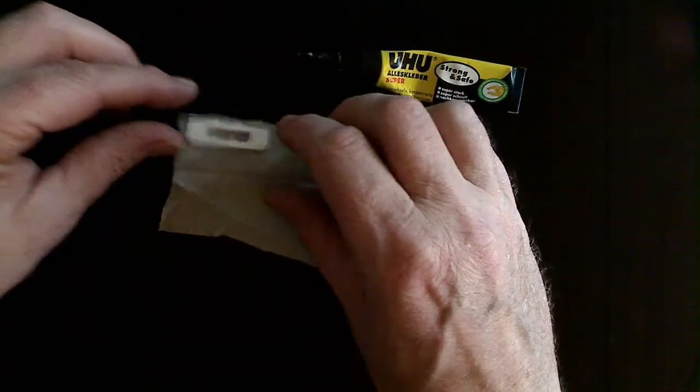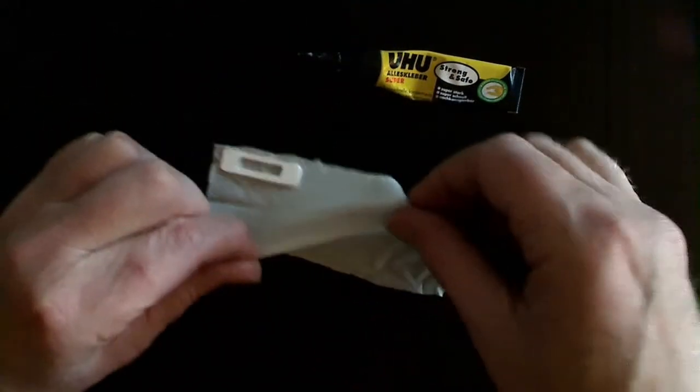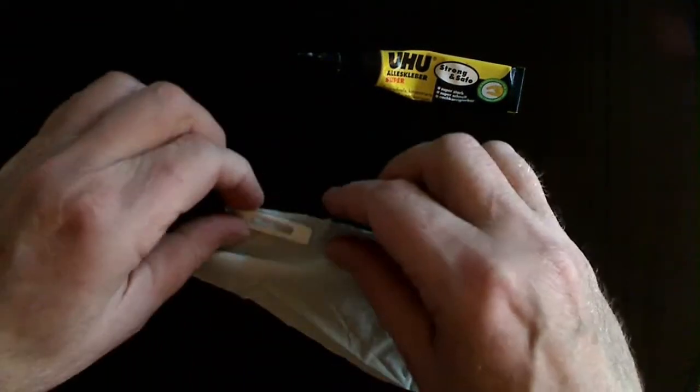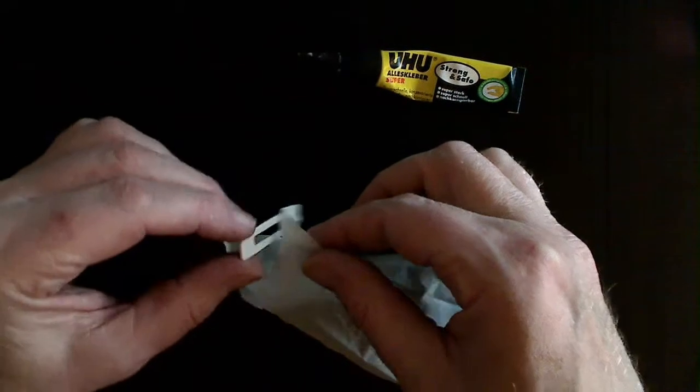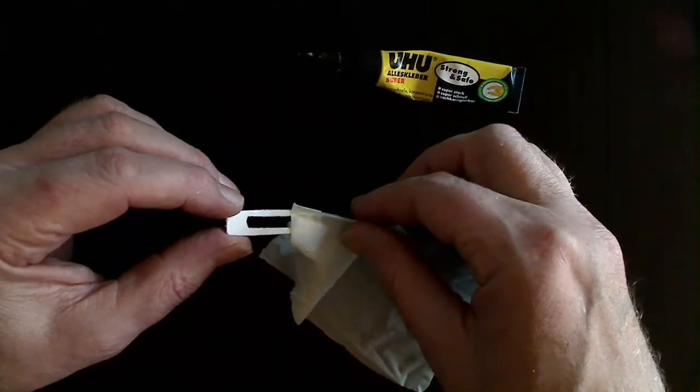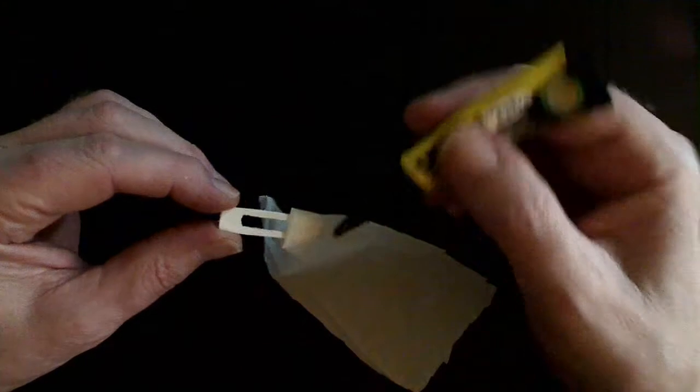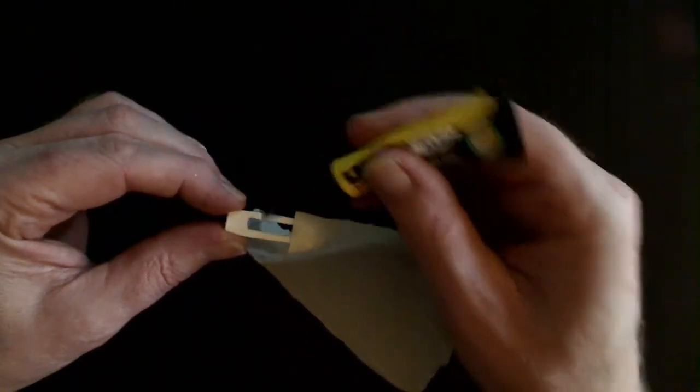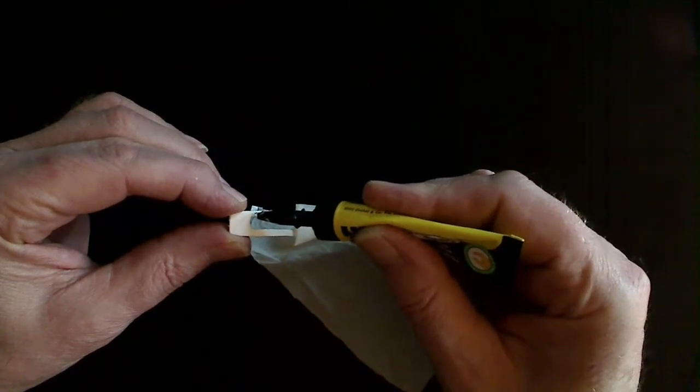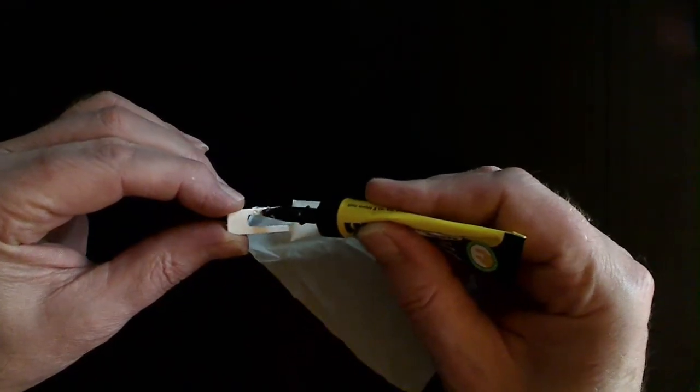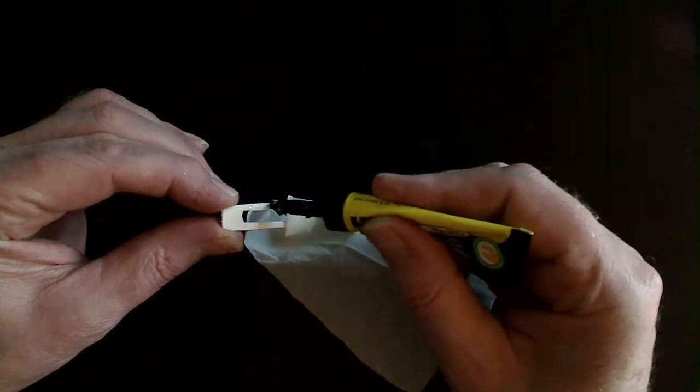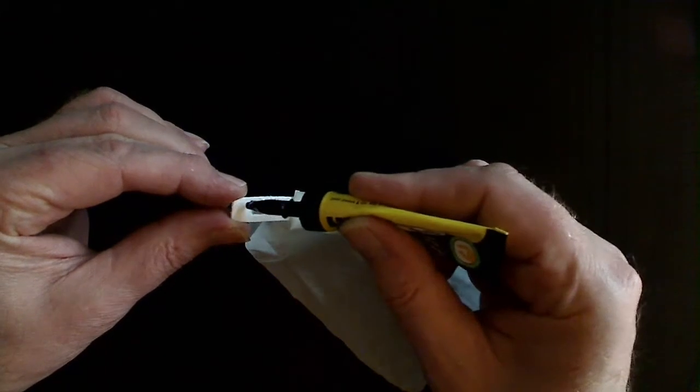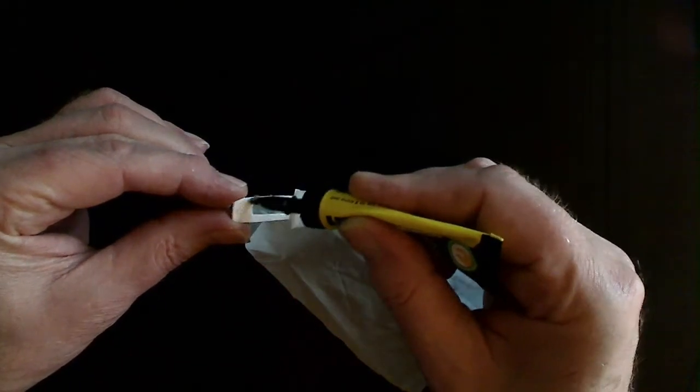Careful not to get it on your fingers because it's super glue. So I'll just stick the left side of this piece of plastic down on there and stretch out the rubber a little bit. This stuff dries, like, within 10 seconds.